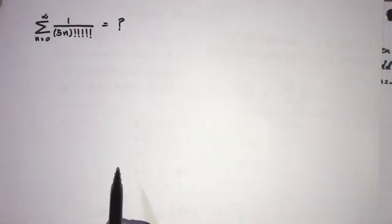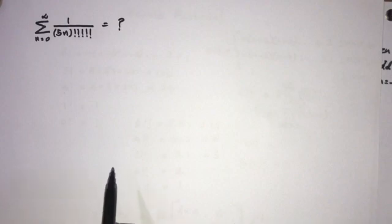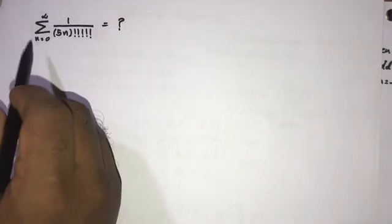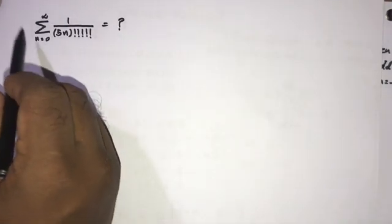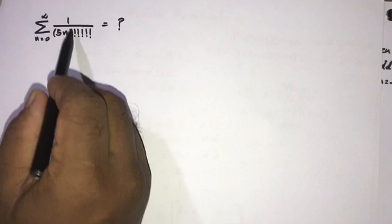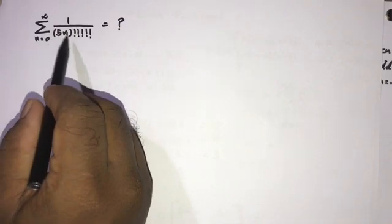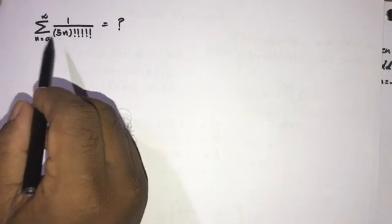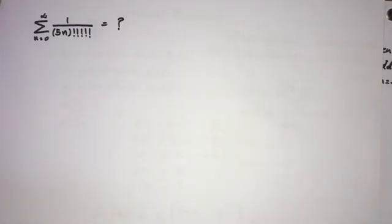Hi, welcome to the Mathematics channel. Today we are going to solve another interesting question. The question is: sum from n equals 0 to infinity of 1 over (5n) 5-factorial, that is the 5-multifactorial notation.